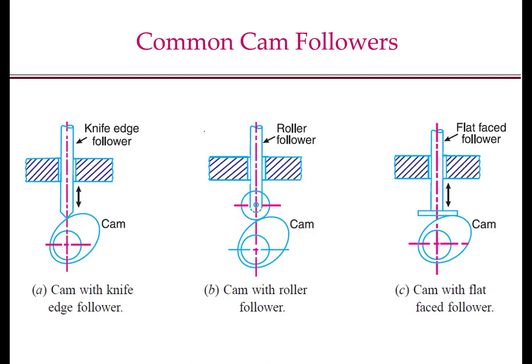We will be considering three types of cam followers: the knife edge follower, the roller follower, and the flat faced follower. The knife edge follower has a point end. The roller follower is an example of a curved follower surface. A flat faced follower is one where the contact surface of the follower is flat or planar.